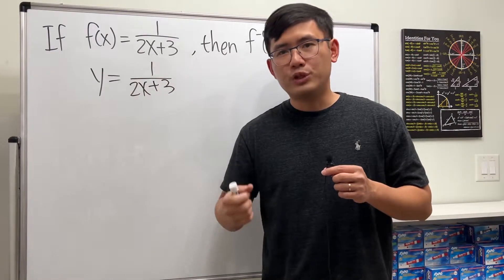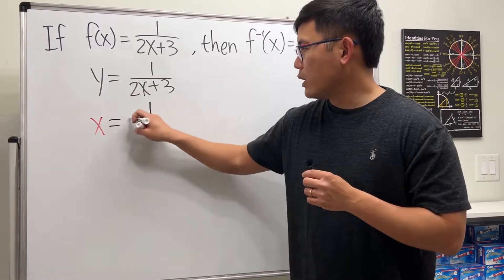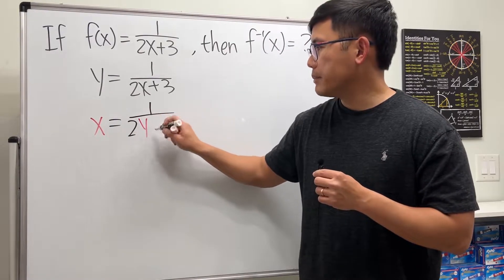Second step, we switch x and y, so we will have x that's equal to 1 over 2y plus 3.